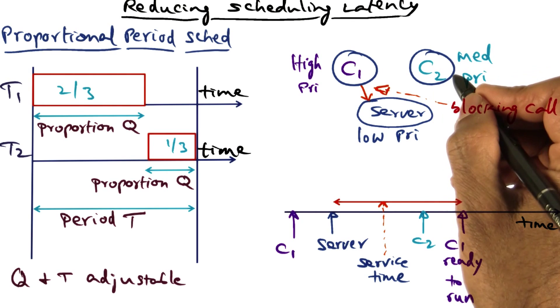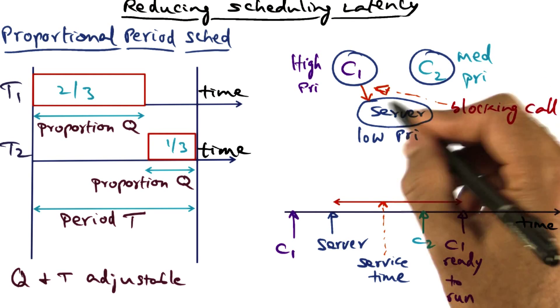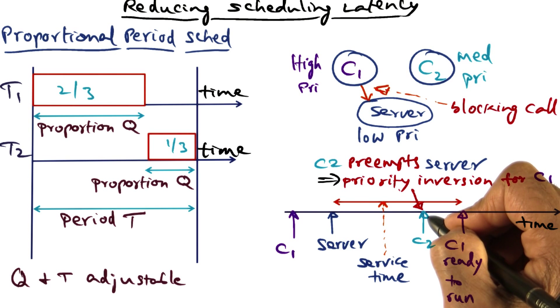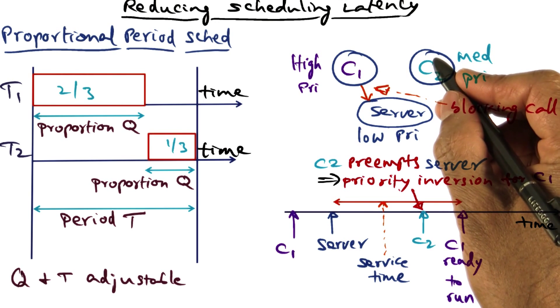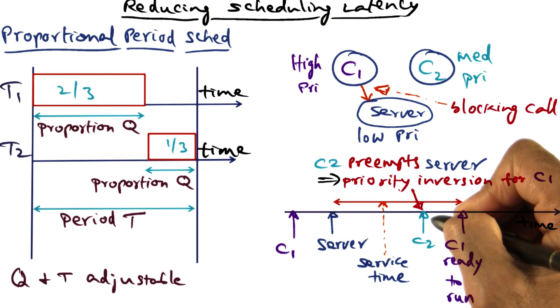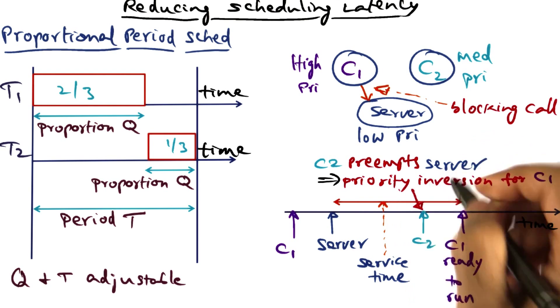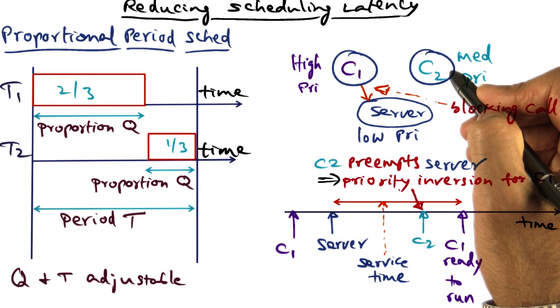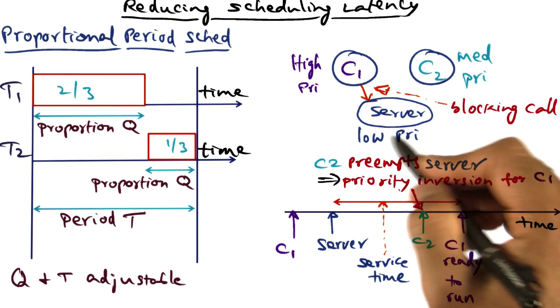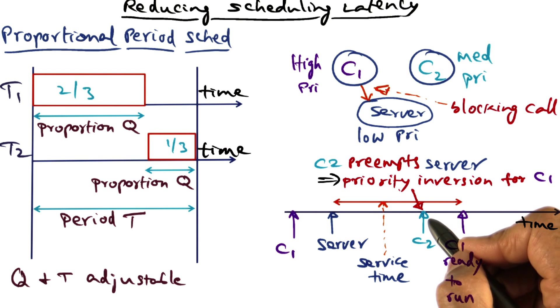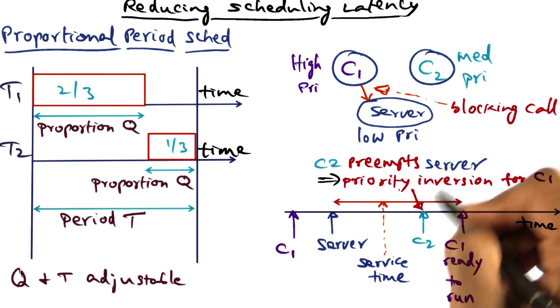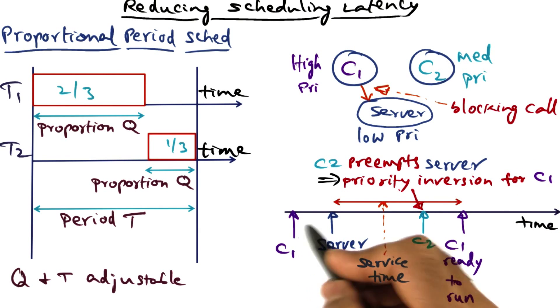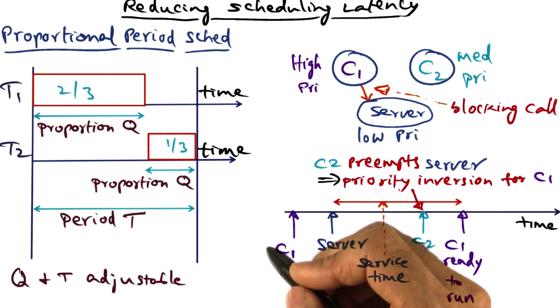So what happens at this point is that this medium priority task, because it is higher than the server's priority, is going to take over, preempting the server, and that is essentially a priority inversion so far as C1 is concerned, because C1 is higher in priority than C2. But unfortunately, at this point in time, the server is the one that is scheduled, and that is lower priority than either of these two. And therefore, C2 happily preempts the server and takes over the CPU. But from the point of view of C1, that's a priority inversion, and it is a time-sensitive task that affects the timeliness of time-sensitive tasks.